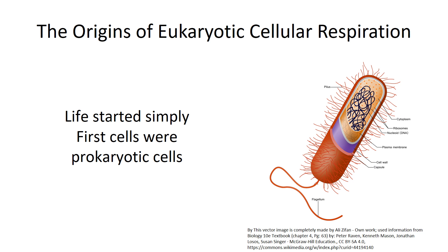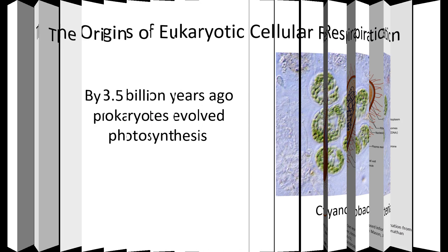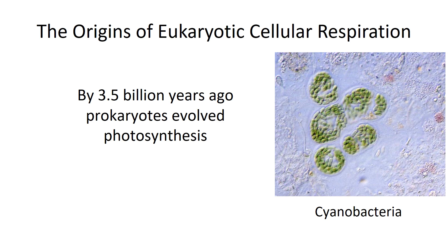When life began around 3.8 to 4 billion years ago, it began as simply as it could. Therefore, the first cells were prokaryotic cells, and they've been around ever since. Within a very short time of life evolving on the planet, another remarkable invention of evolution occurred, and this was photosynthesis.